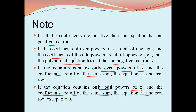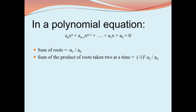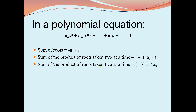For a general polynomial equation, the sum of roots = -a₁/a₀; the sum of products of roots taken two at a time = (-1)² · a₂/a₀; the sum of products of roots taken three at a time = (-1)³ · a₃/a₀; and the product of all roots = (-1)ⁿ · aₙ/a₀.